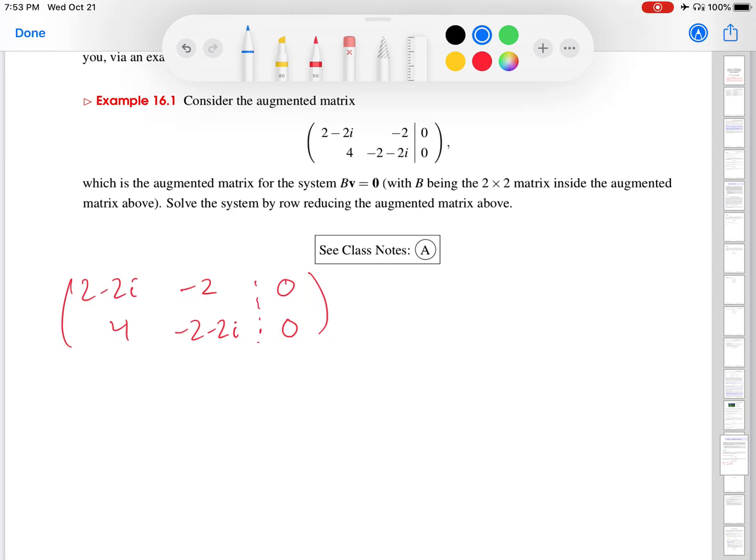So the only way to get a complex number and make it into a real number is to multiply it by its complex conjugate. So what I'm going to do is I'm going to multiply row one by row one times the complex conjugate of this number. Remember, that's where we replace i with negative i. So we get 2 plus 2i. So if I do that, I'm not changing the second row. So there it is. That stays the same.